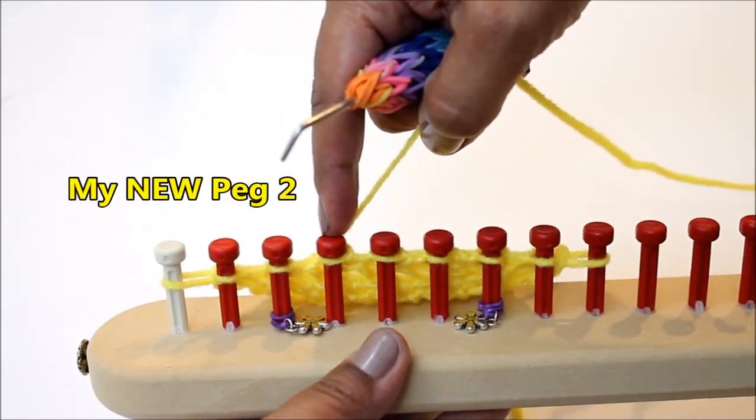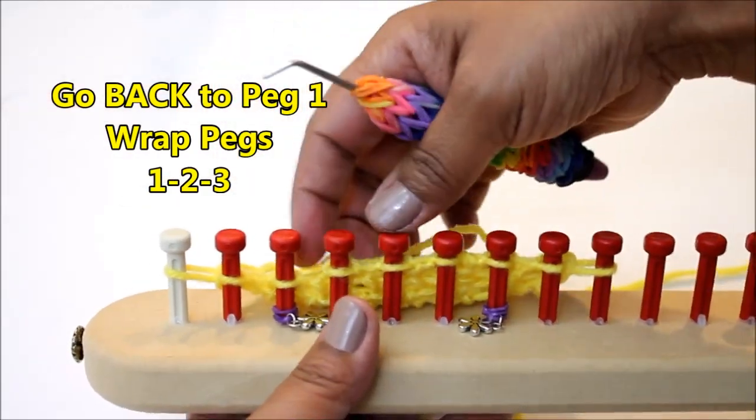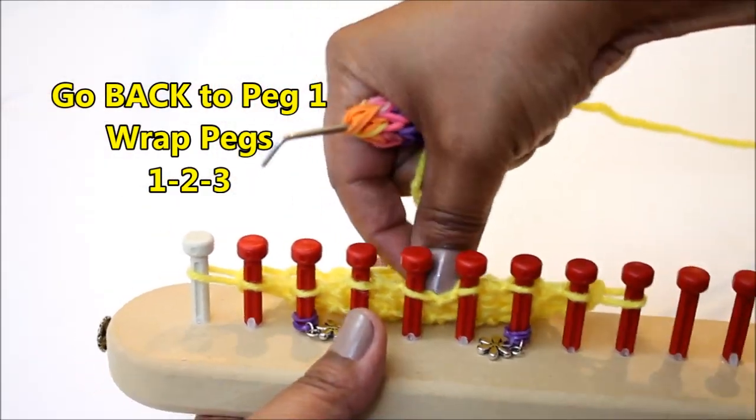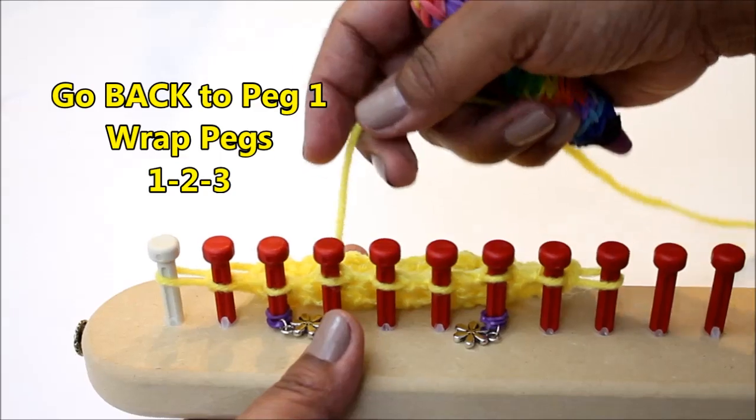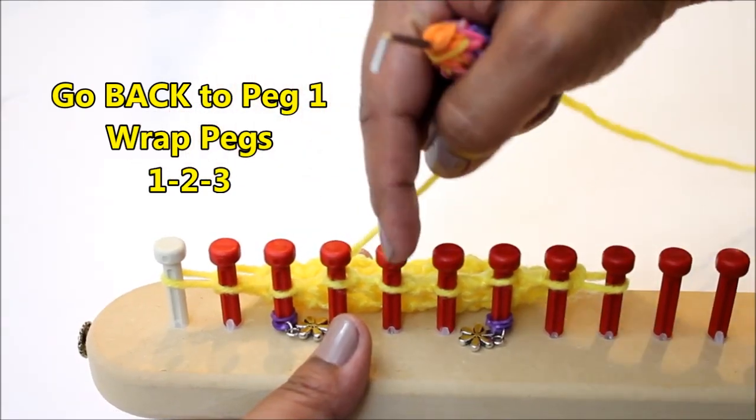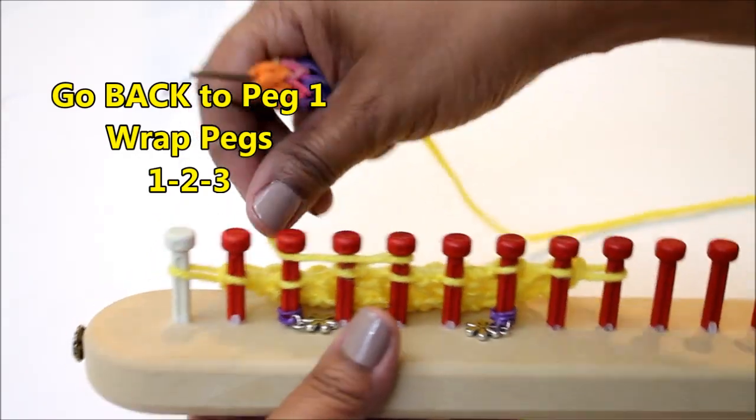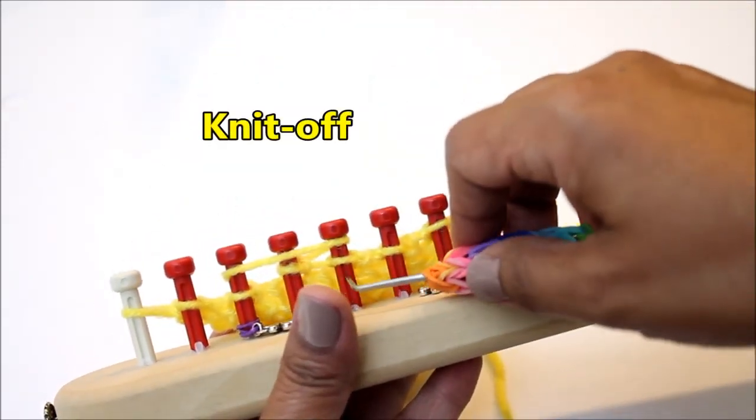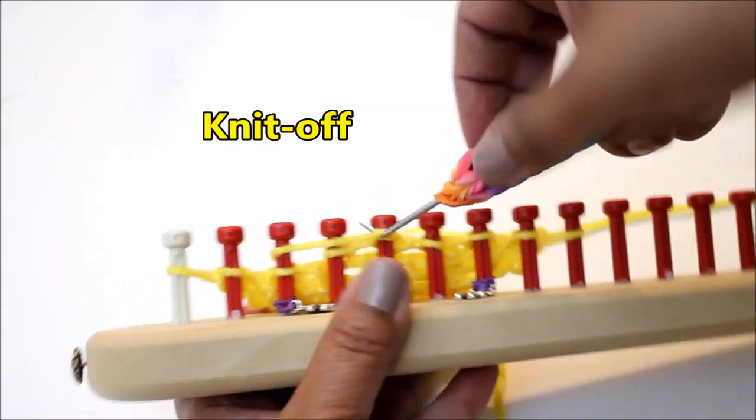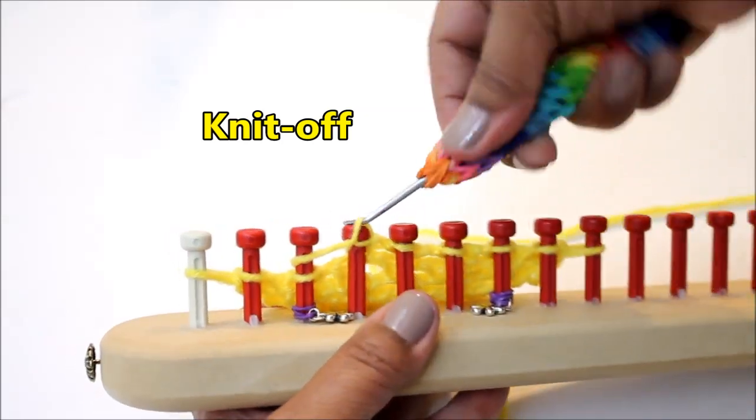Now this is my new peg two and I'm going to do the same thing again. I'm going in that direction so to find peg one because this is peg two and I'm going in that direction, my peg one is in the opposite direction so it's here. I'm going to wrap peg one, two, and three and knit off. That's the mock crochet in summary.